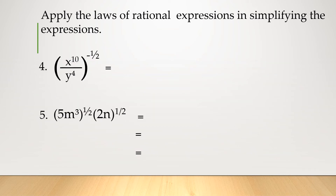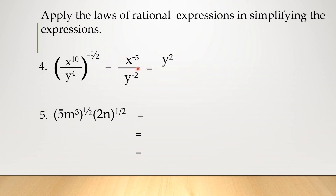Now here we have x raised to 10, divided by y raised to the 4th power, all of this raised to negative 1 half. We distribute: for the numerator, 10 times negative 1 is negative 10, divided by 2, that is negative 5 — so x raised to negative 5. For the denominator: 4 times negative 1 is negative 4, divided by 2 — that is y raised to negative 2. Since both are negative, we flip them — the denominator goes to the numerator and vice versa, becoming positive. That is our final answer.